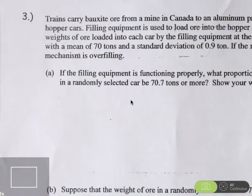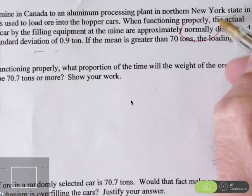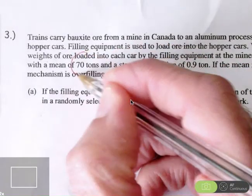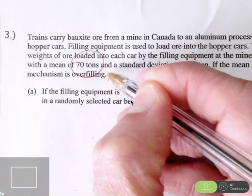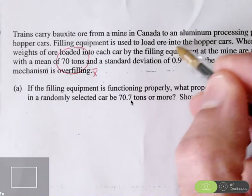When functioning properly, the amounts of ore loaded into each car are approximately normally distributed. There is our shape. The mean is 70 tons, there's our center. And the spread is 0.9 tons.